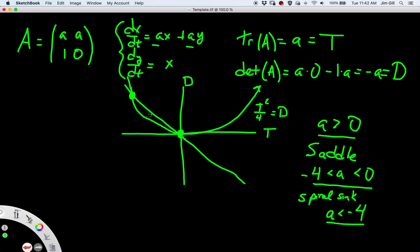When A is less than negative 4, that corresponds to this line here, we continue it. And here we're below the parabola. Below the parabola on the left side corresponds to a sink-type behavior. So, depending on the value of A, we're either going to get a saddle, a spiral sink, or a sink.